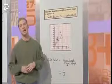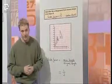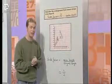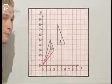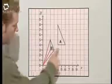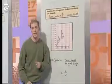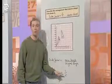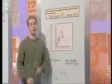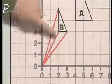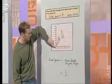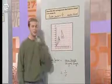Describing the enlargement means working out the scale factor and the centre of enlargement. To find the scale factor, I use this ratio: new length over the corresponding original length. The new length I chose is one, and the corresponding original length is two. So the scale factor is one over two, which is the same as a half. To work out the centre of enlargement, I drew straight lines from each point on the enlargement through the origin. So zero, zero is the centre.